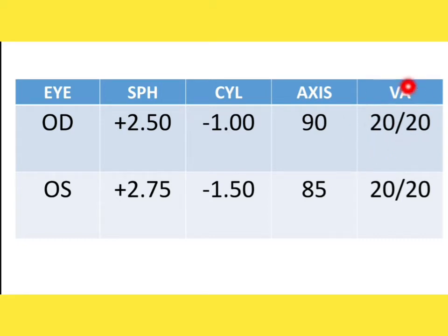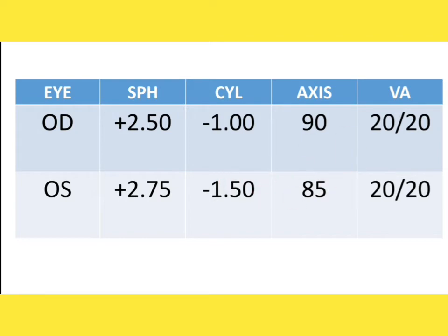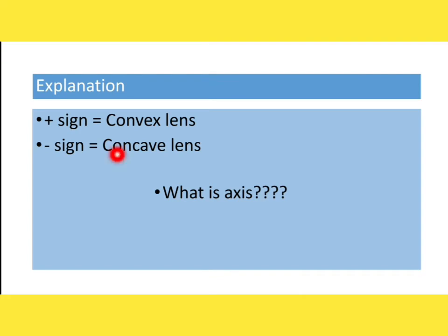Visual acuity indicates how clearly you can see. Some people measure visual acuity in meters — it is written as 6/6, 6/9, or 6/12 depending on how clearly you can read the chart. The oculus sinister section has the same format — the numbers indicate spherical power, cylindrical power, axis of the cylinder, and visual acuity, meaning clarity of your seeing ability.